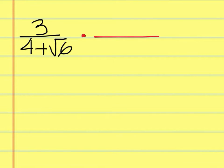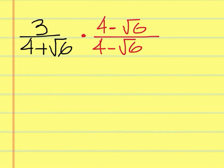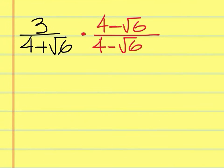So instead of multiplying the top and the bottom by just the square root of 6, you're going to multiply by 4 minus the square root of 6. Whatever this expression is down here, you have to multiply by the same expression except change the sign. And when you do that, it sets up like a difference of two squares.